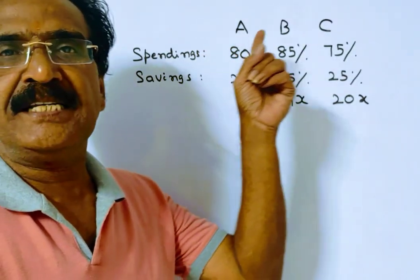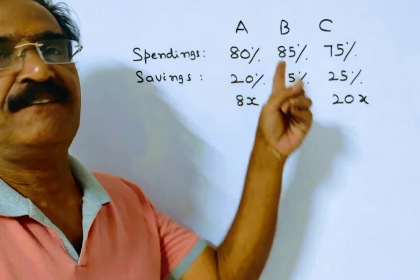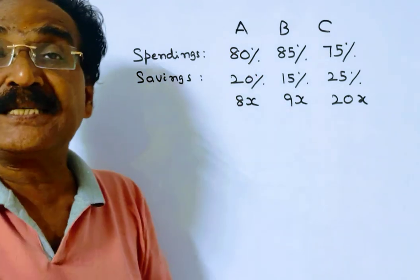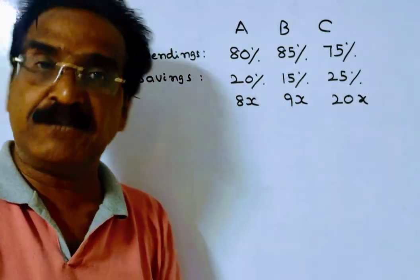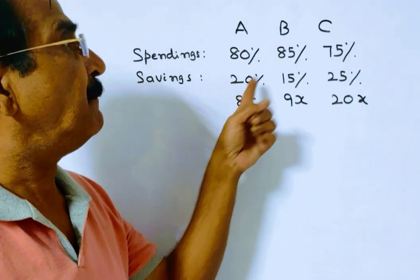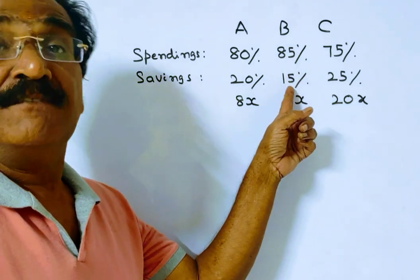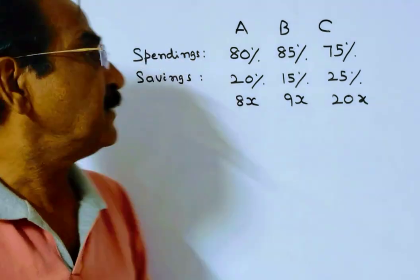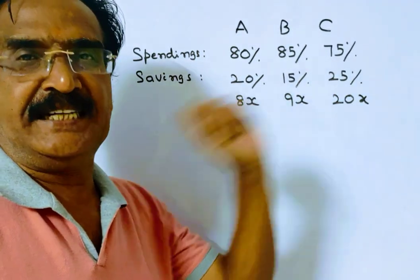See friends, A, B, C spend 80%, 85%, and 75% of their incomes. So A spends 80% of his income, which means A saves 20% of his income. Similarly, B saves 15% of his income, C saves 25% of his income. These are the saving percentages.